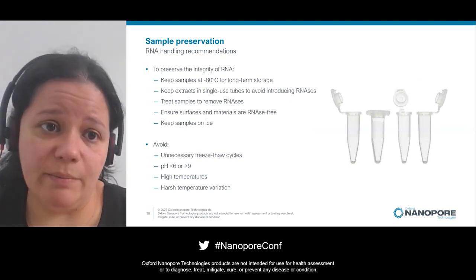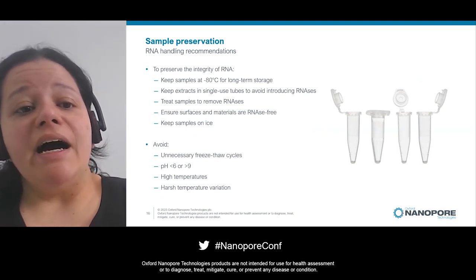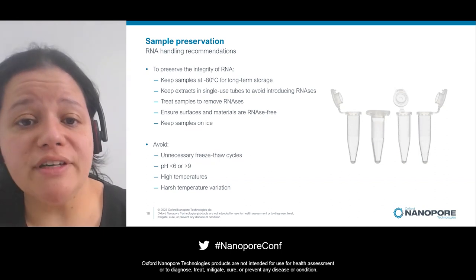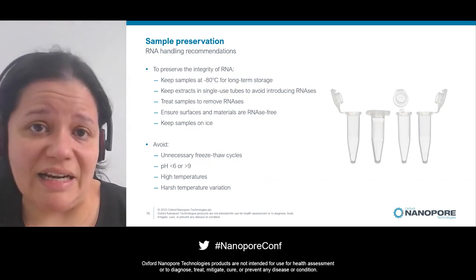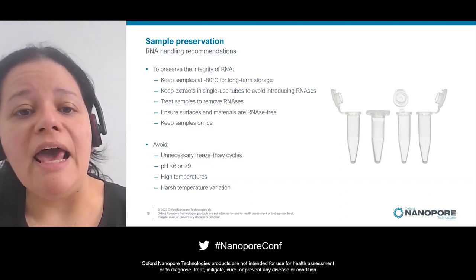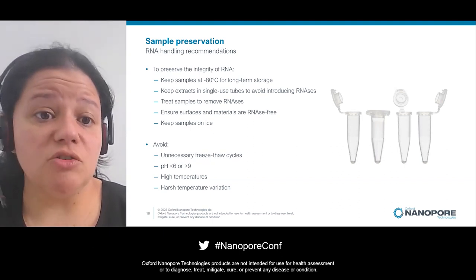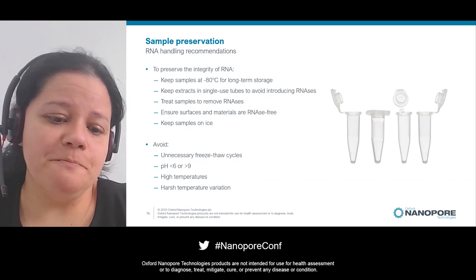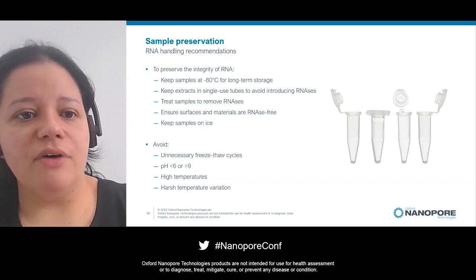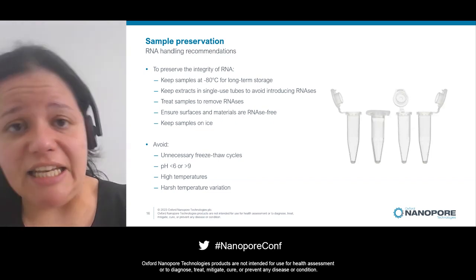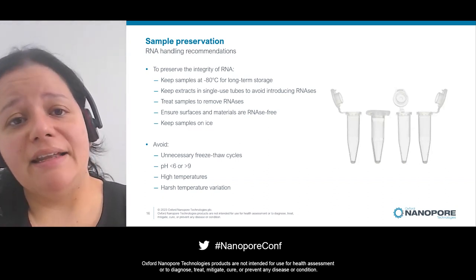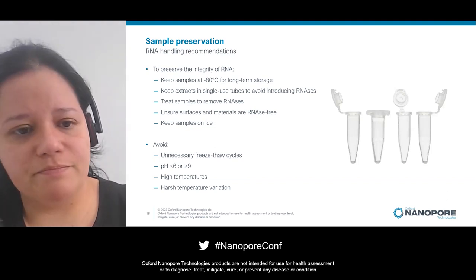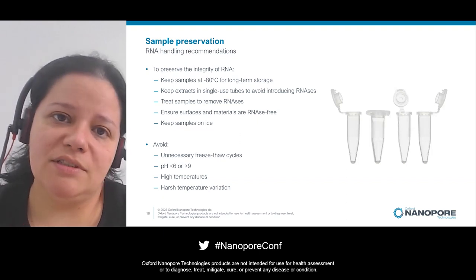Avoid exposing your sample to really high temperatures and avoid introducing any DNases. For RNA, keep extracts at -80°C especially for long-term storage. Ideally keep extracts in single-use tubes — for RNA this is not just to avoid freeze-thaw cycles but mainly to avoid introducing RNases by repeatedly opening and closing the same tube. Treat surfaces with RNase-removing solutions, keep samples on ice, and avoid temperature variation.